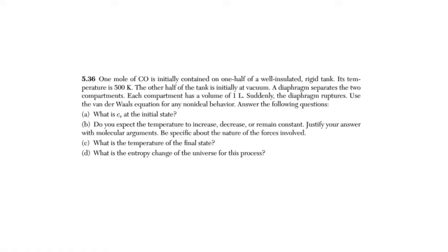One mole of CO is initially contained on one half of a well-insulated rigid tank. Its temperature is 500 Kelvin. The other half of the tank is initially at vacuum. A diaphragm separates the two compartments. Each compartment has a volume of one liter. Suddenly the diaphragm ruptures.